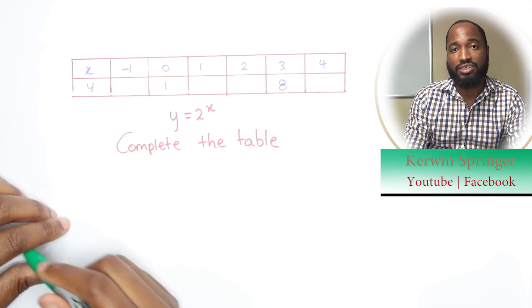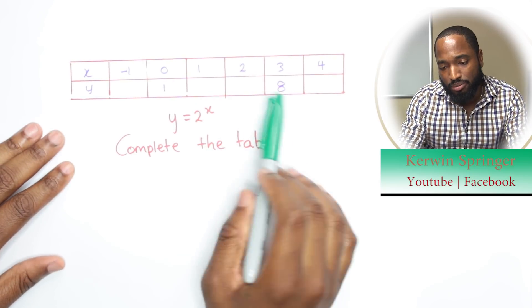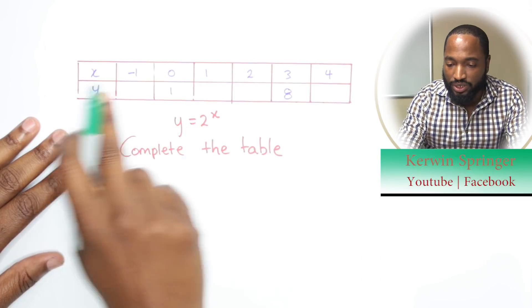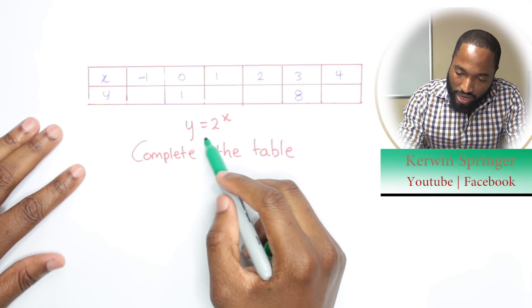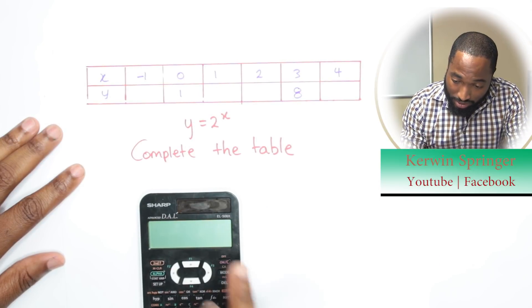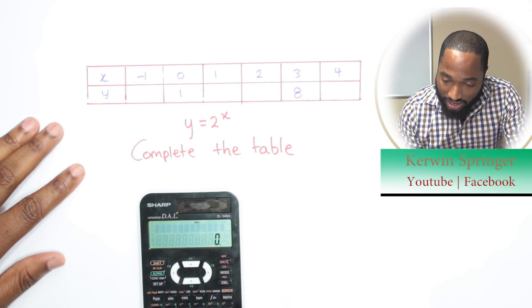Alright, so the last part of number nine is to complete this table. This is the function that they gave us and we need to complete this table. So y equals 2 to the power of x. You actually don't need a calculator to do this question. If you're feeling paranoid, you can press it in your calculator.